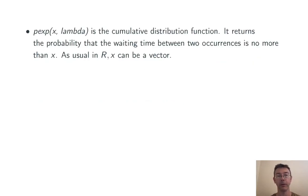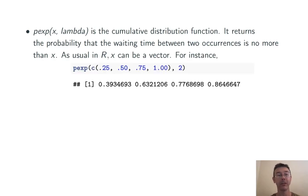Next, pexp, which is the cumulative distribution function. It returns the probability that the waiting time between two occurrences is no more than x. As usual in R, x can be a vector. For instance, pexp(c(.25, .50, .75, 1.00), 2) returns probabilities for those times when the mean number of occurrences per unit interval is equal to 2.